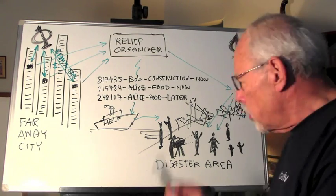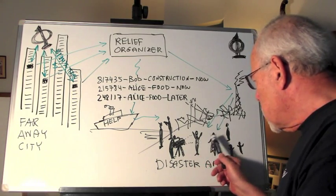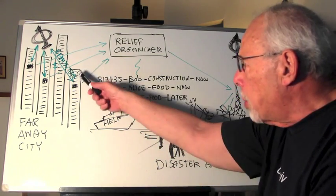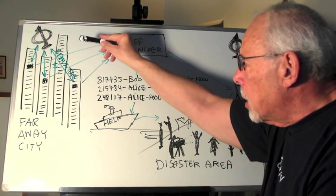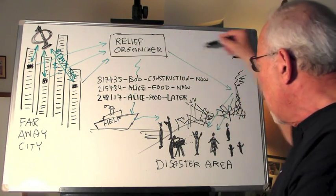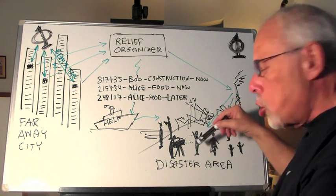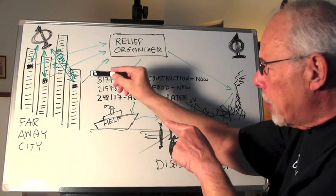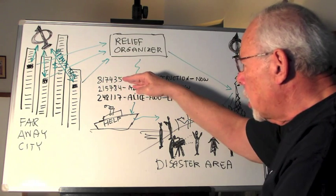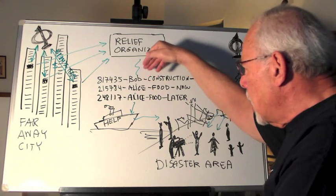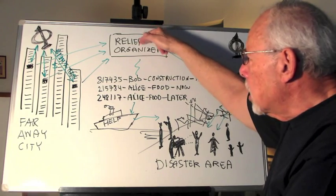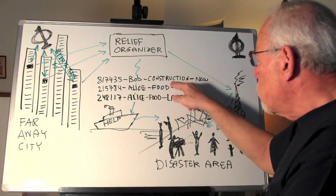Disaster strikes. Television crews, interviews — Alice and Bob flash out their cell phone number and email address. Good people in a faraway city contact BitMint, pay with a credit card, and get back a claim check. Those claim checks, through the relief organizer, come directly to the needy — the people that the good people there want to help. A claim check is a digital sequence attached to a recipient. Only Bob can redeem this claim check, not the relief organizer, not anybody else. It's good for construction and it's good for now.